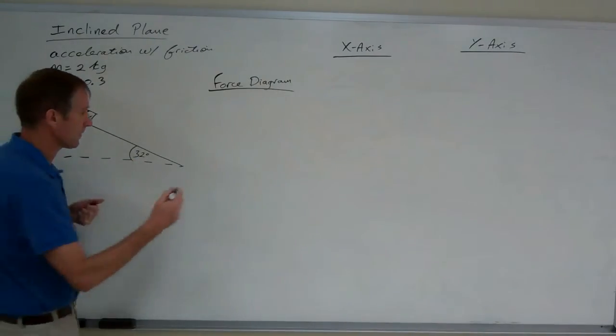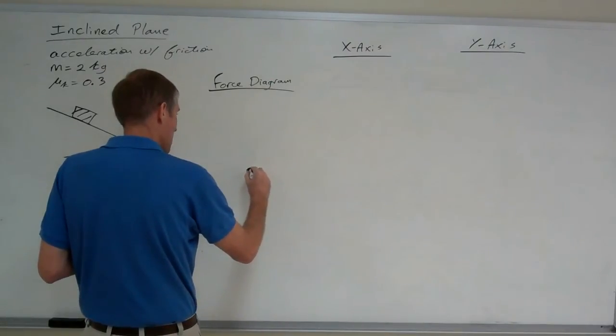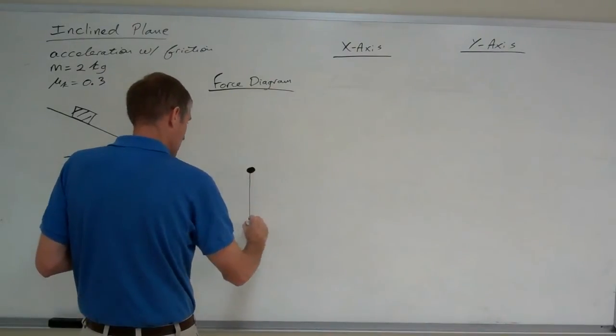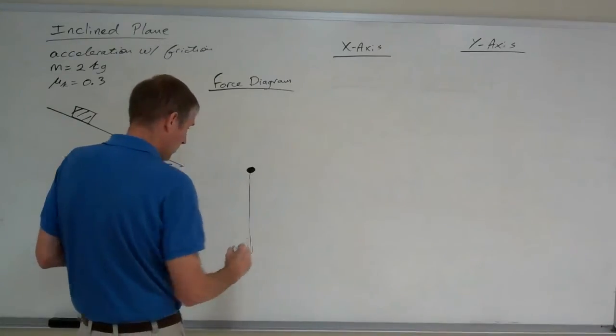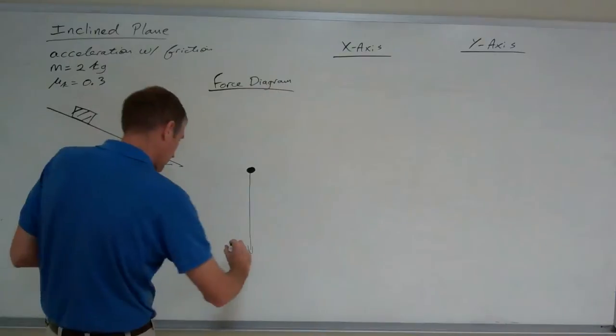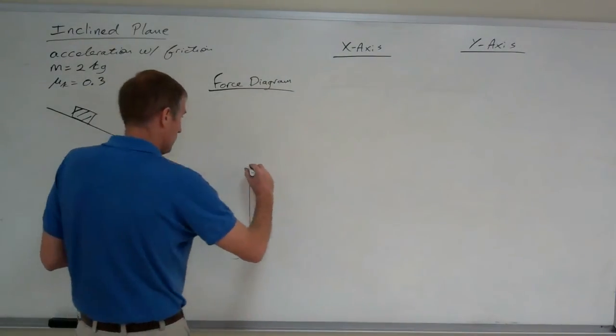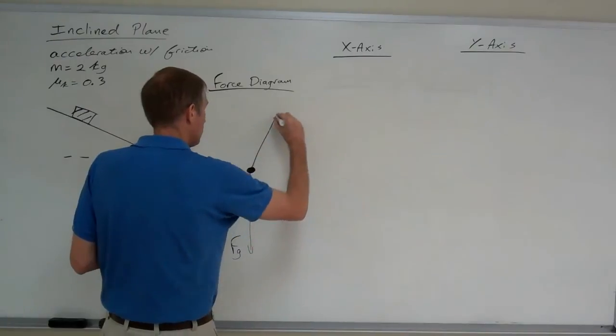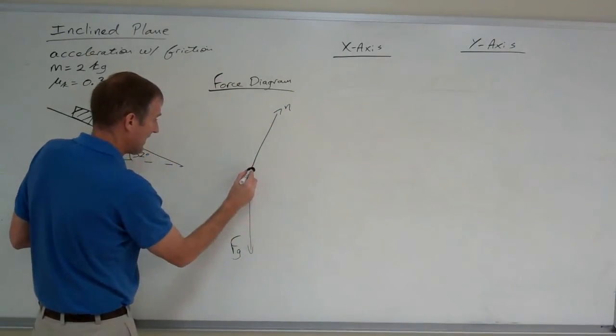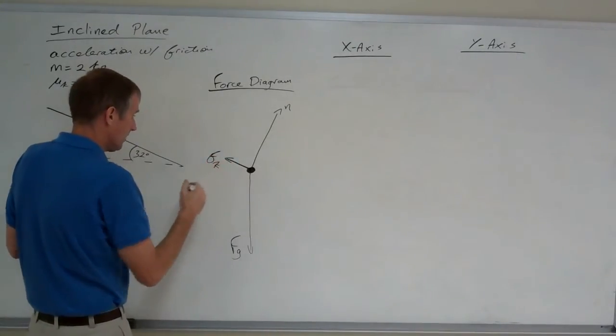Let's draw a force diagram. Draw the dot. Draw the weight vector, which I'm going to label Fg for force of gravity. Draw the normal force perpendicular to the ramp. And then draw the kinetic friction uphill.